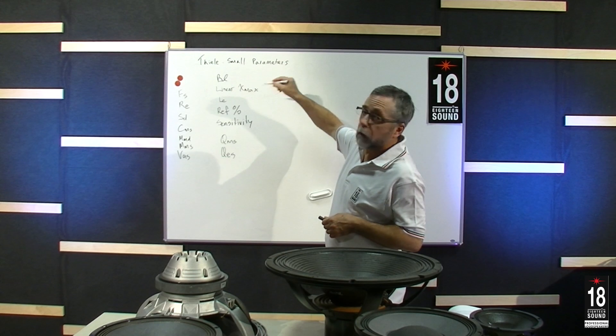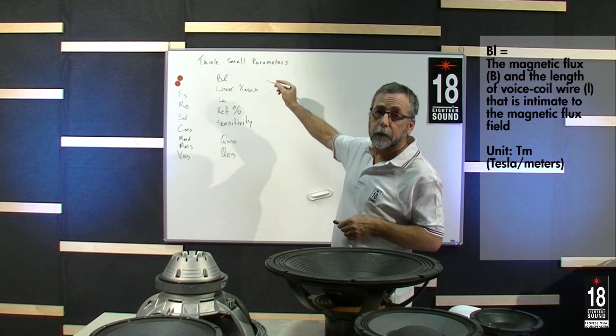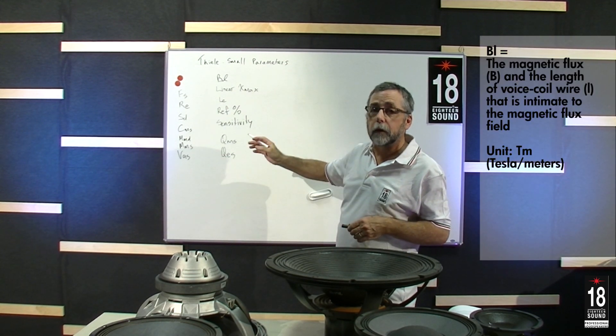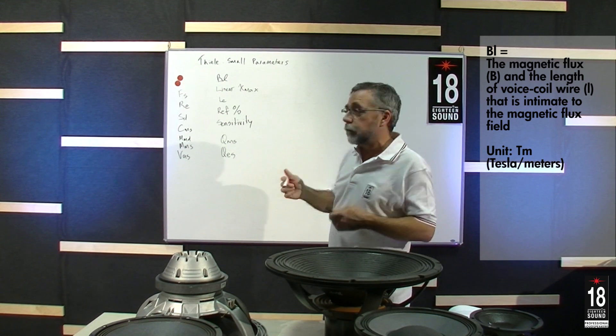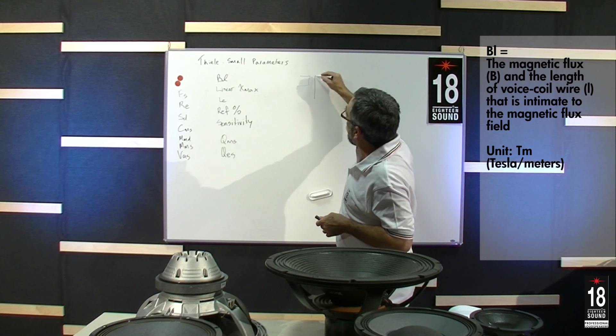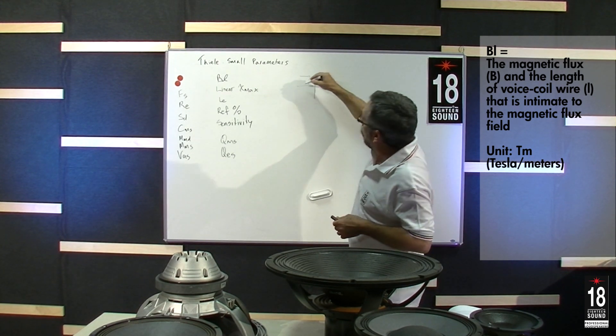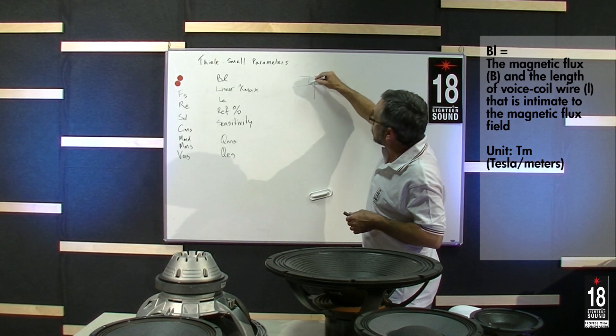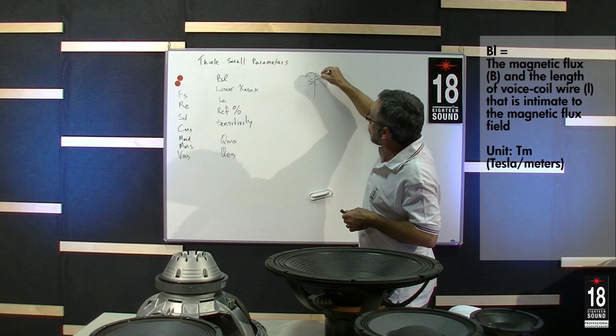The B refers to the flux density that's in the gap and near the gap, and the L is the length of wire that is in the flux field. If I draw a simple cross section of the gap, we have magnetic flux that travels across and there's a little bit of fringe.